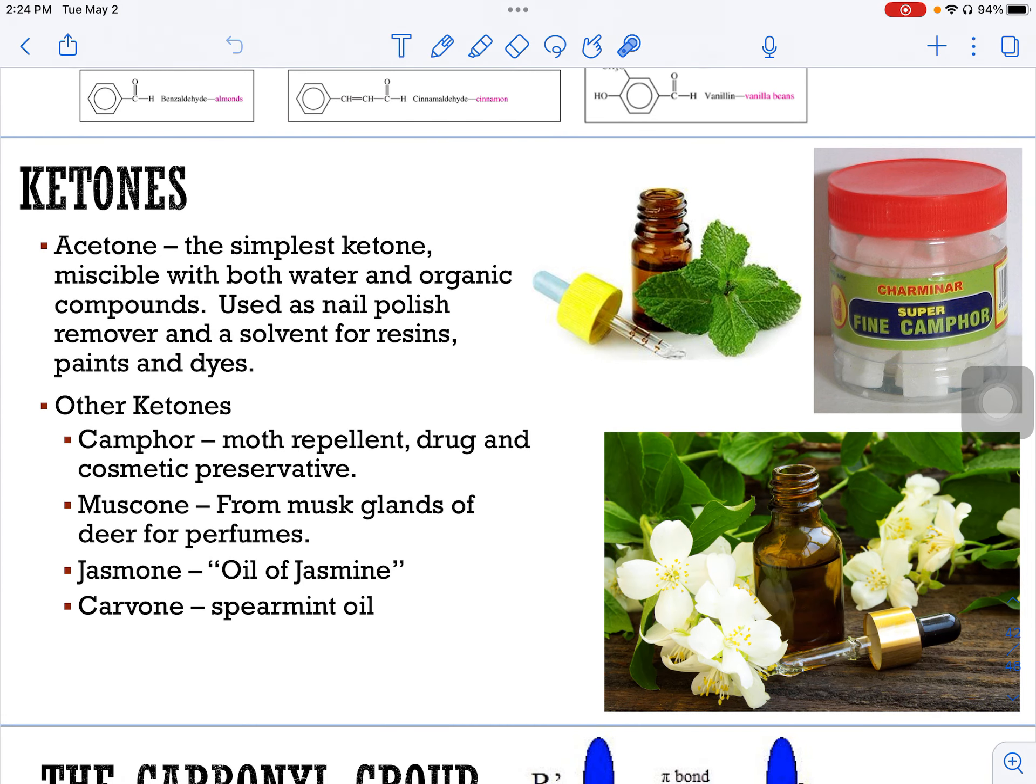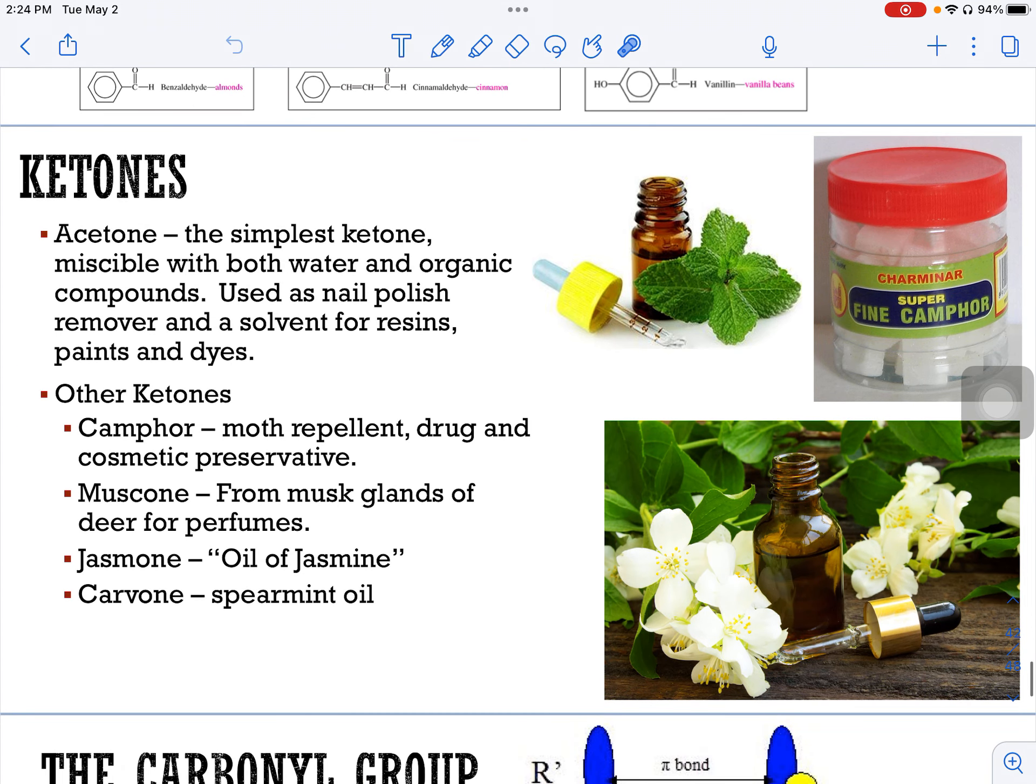The next functional group I want to talk to you about is the ketones. Acetone is the simplest of the ketones. That would be a carbon bonded to a carbon, a carbonyl group, and then another carbon. And these, of course, are going to be CH3s on either side. So that's acetone. Acetone is a simple ketone that dissolves in both water and organic compounds. It's used in nail polish remover. That's that smell that you're always smelling, and a solvent for different resins, paints, and dyes.